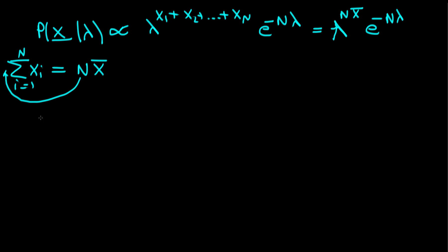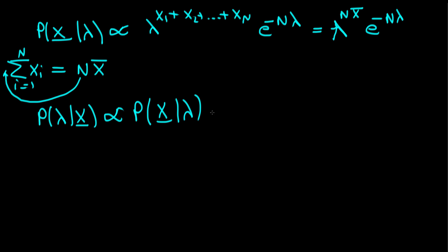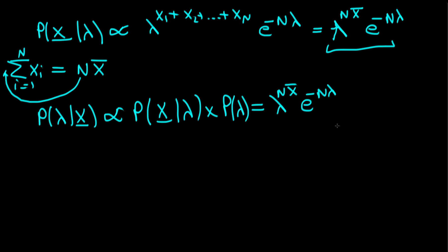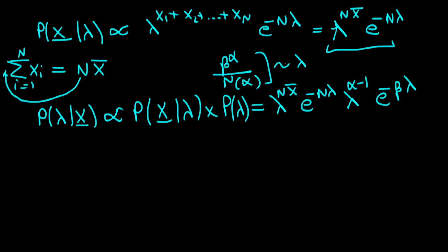Now let's formulate our posterior distribution. The probability of lambda given our vector of observations x is proportional to the likelihood times the prior. Writing out each term: from the likelihood we have lambda to the power n times x̄, times e to the power minus n lambda. For the prior, we forget about the constants beta to the power alpha divided by gamma of alpha — since they don't involve lambda — and write the prior as proportional to lambda to the power alpha minus one times e to the power minus beta times lambda.